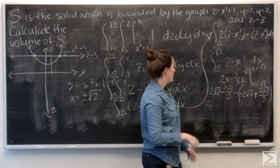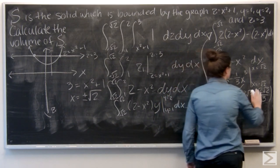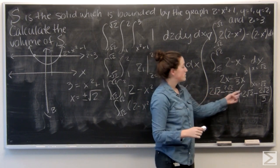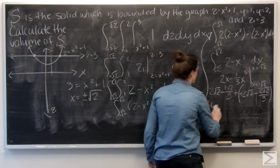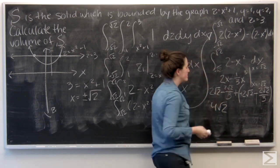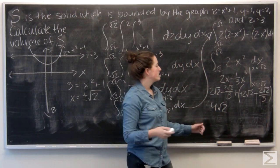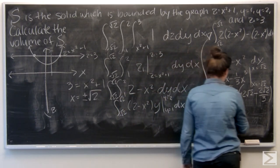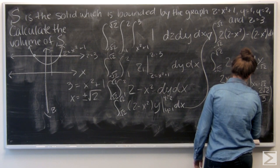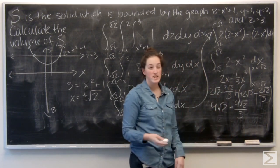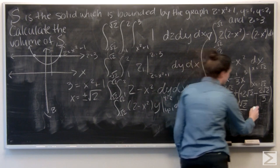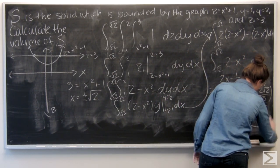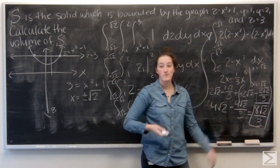So I'm ready to add these up. Plus, plus, minus. So 2 root 2 plus 2 root 2 is 4 square root of 2. And negative 2 square root of 2 over 3 minus 2 square root of 2 over 3 is 4 square root of 2 over 3. So subtract, I'm going to get 8 root 2 over 3. And that's my answer for the volume of S.